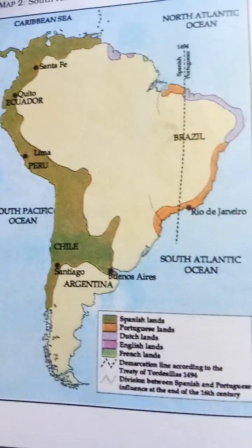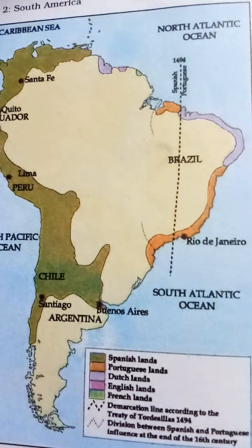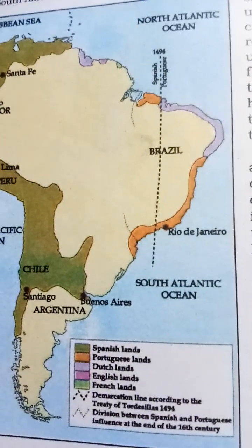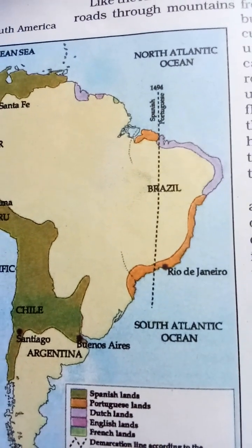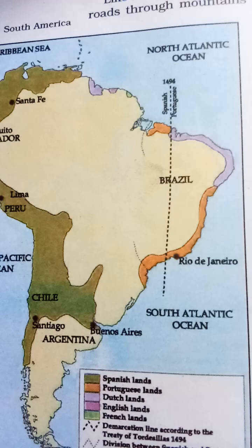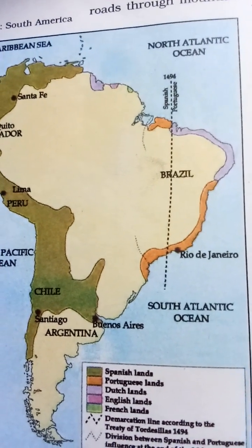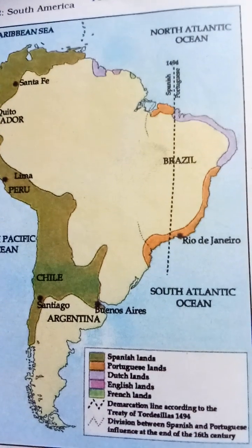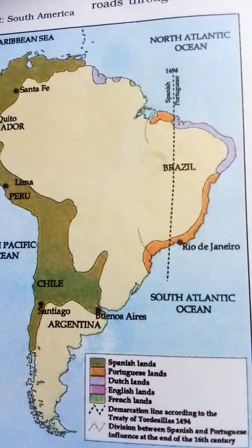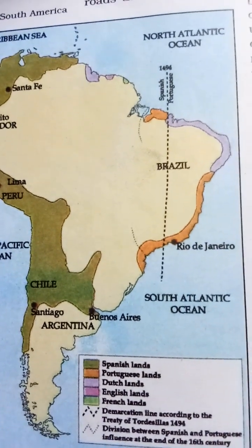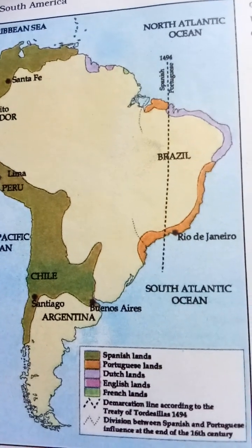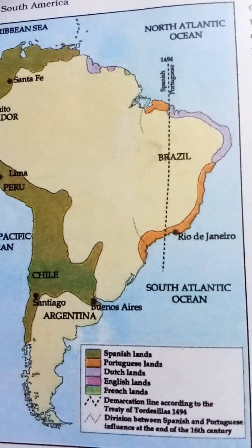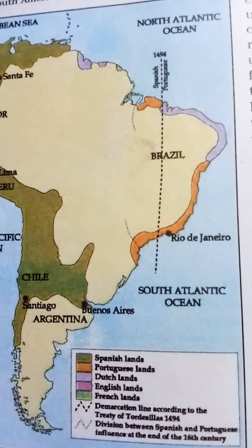The empire was highly centralized with the king representing the highest source of authority. Newly conquered tribes were absorbed effectively. Every subject was required to speak Quechua — the language of the Quechua tribe. Each tribe was ruled independently by a council of elders, but owed its allegiance to the ruler. Local rulers were rewarded for their military cooperation.